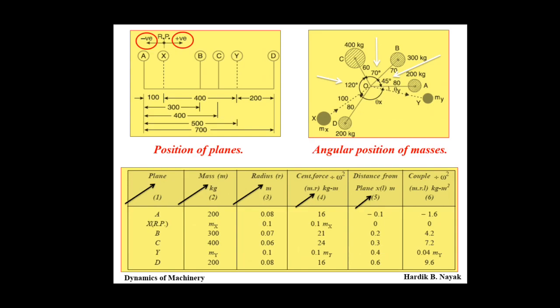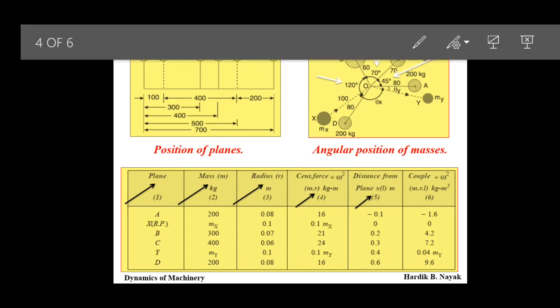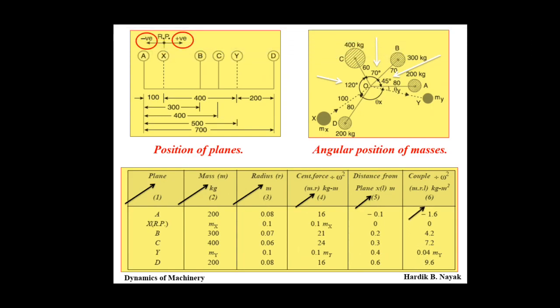Now draw angular position of masses. I request you all the students, please draw this angular position of masses as per dimensions. Because it will help to draw force polygon and couple polygon. You can see, distance angle between plane A and B is 45, angle between mass A and B is 45 degree. B to C is 70 degree. And C to D is 120 degree.